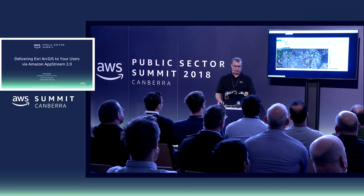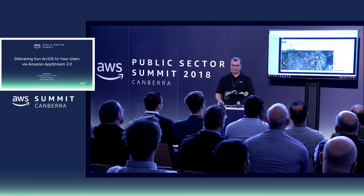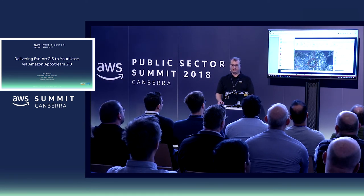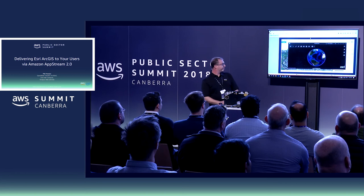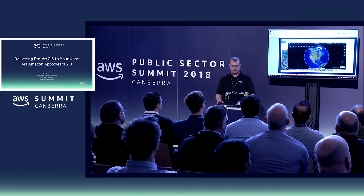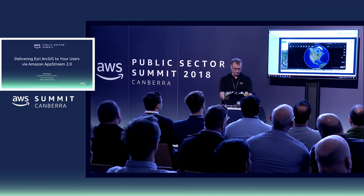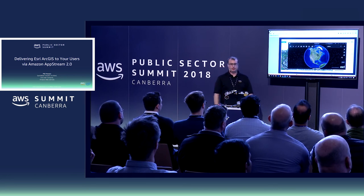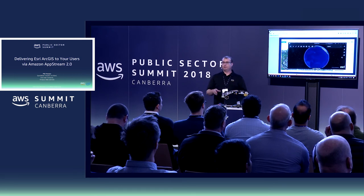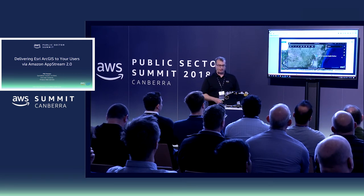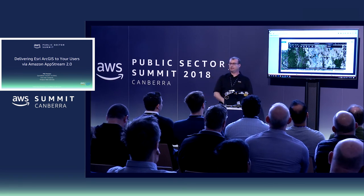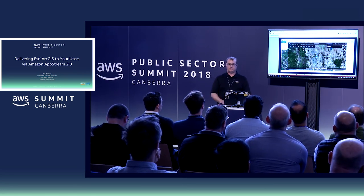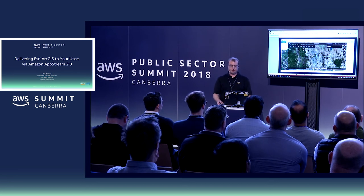Let me do a bit of a switch. I'm going to load up ArcGIS Earth, which has the capability to do some 3D imagery and rendering. Both of these applications are now running within the single instance that I'm connecting to. It's pretty cool — I don't have to have a heavy desktop or a heavy laptop. It's all running on the AWS cloud inside an AppStream instance.